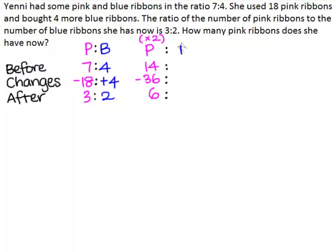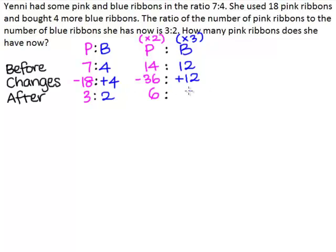And here we have the column for the blue ribbons. 2 needs to be multiplied by 3 to make 6, so each of the numbers in the column for blue ribbons will be multiplied by 3. Here we have 4, and 4 times 3 will give us 12. Here we have plus 4, and when we multiply that by 3, we will have plus 12. Here we have 2, and 2 times 3 will give us 6.